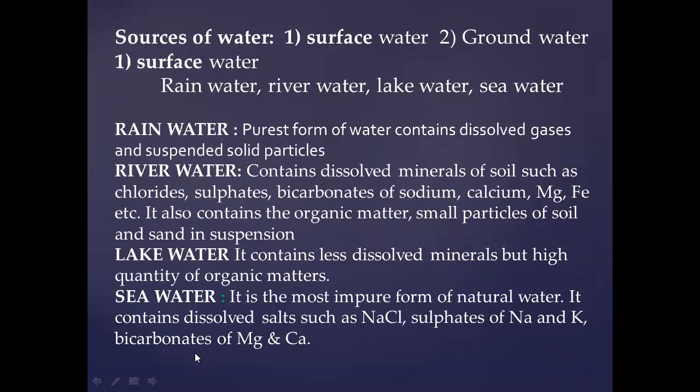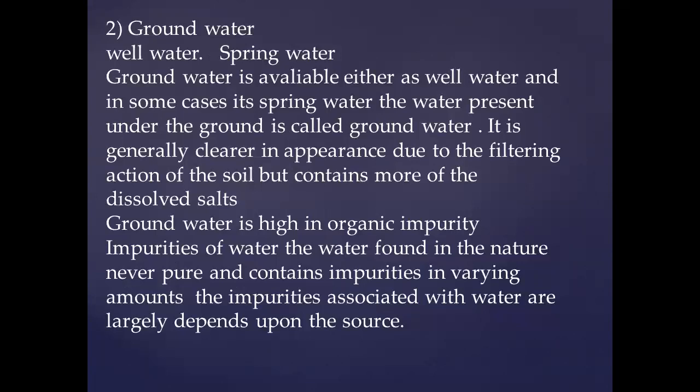Then comes lake water, which contains dissolved minerals but a high quantity of organic matter, since it is stagnant and remains at one particular locality. The inorganic component depends on the area in which it is present. Then comes sea water — it is the most impure form of natural water. It contains dissolved salts like NaCl, sulfates of sodium and potassium, and bicarbonates of magnesium and calcium. It also contains suspended, soluble, and floating impurities — almost all varieties of impurities are present in sea water.